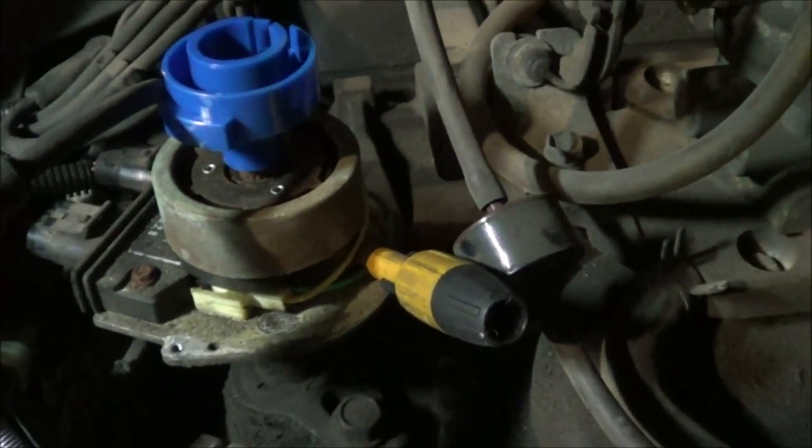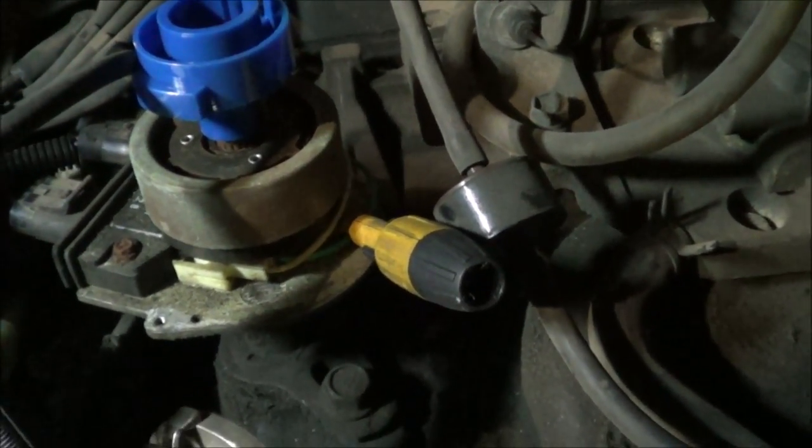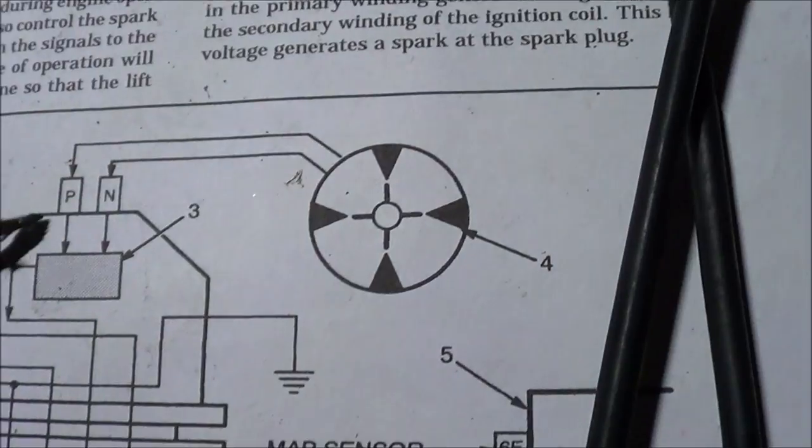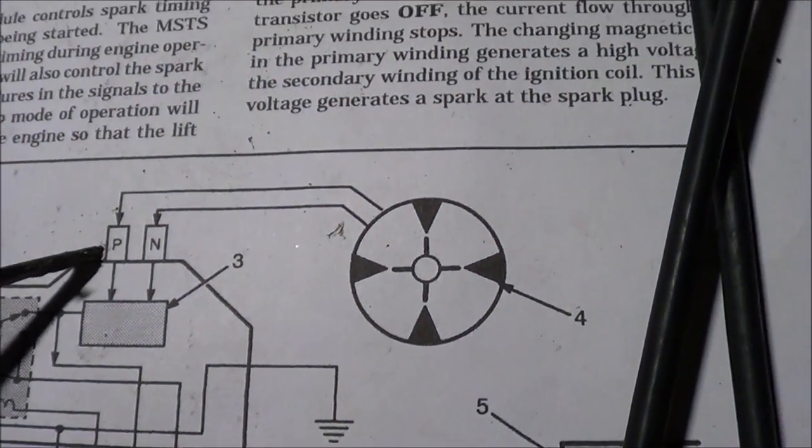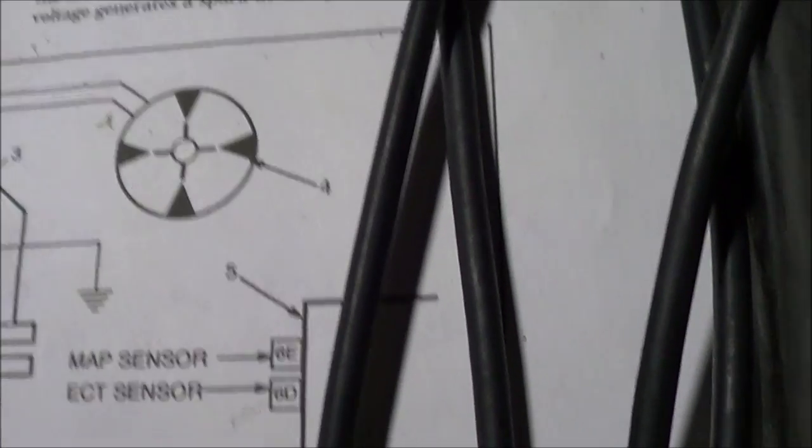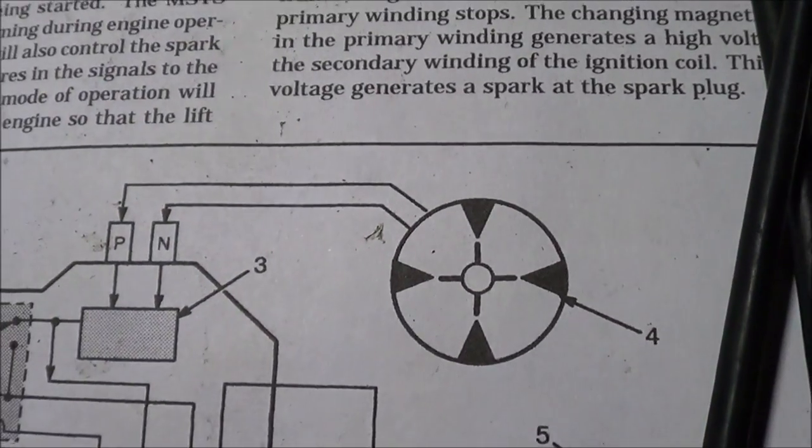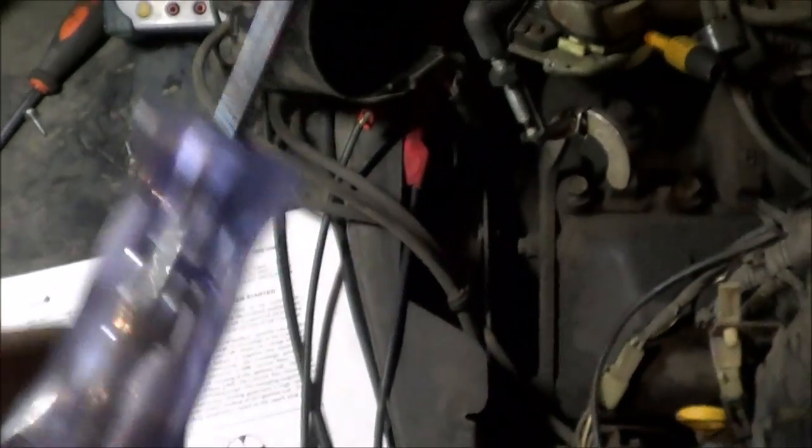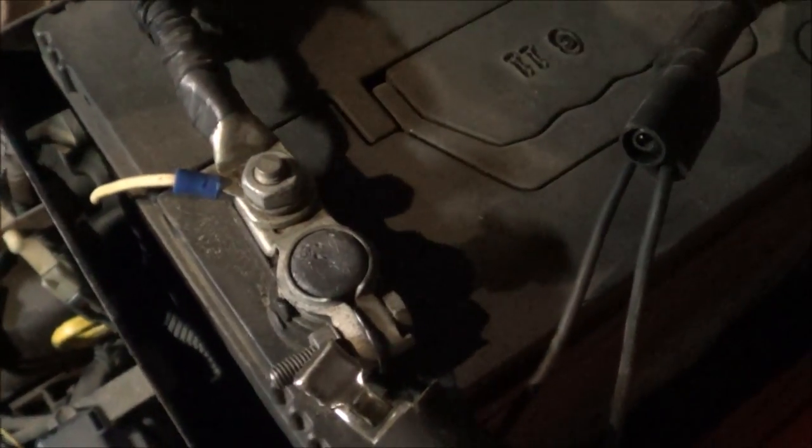Maybe the reluctor is not sending out a signal. So the one way I always want to do this is do a bypass test. Right now I have a piercing probe connected to the P terminal, which is the green wire coming from the reluctor going into the ignition module.